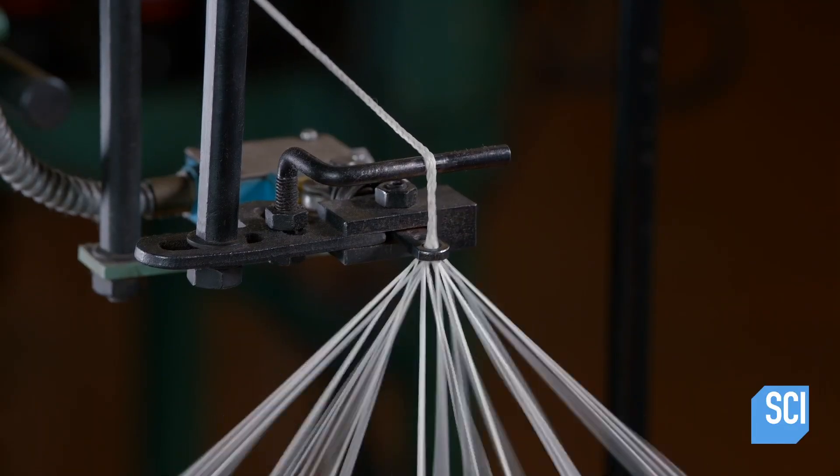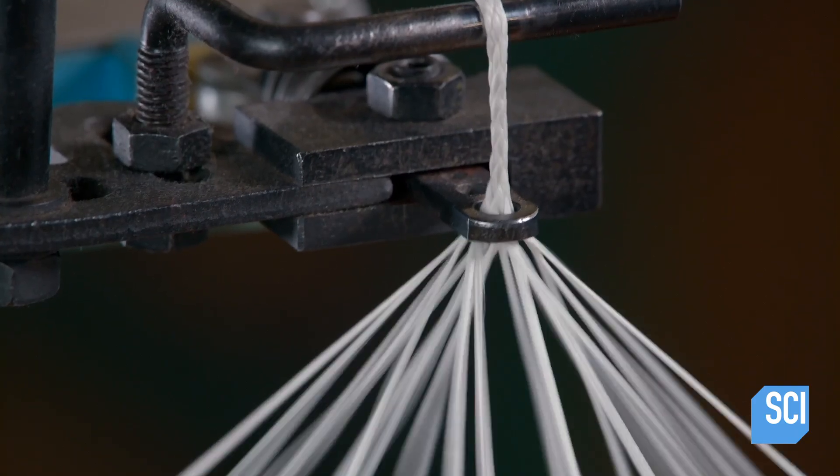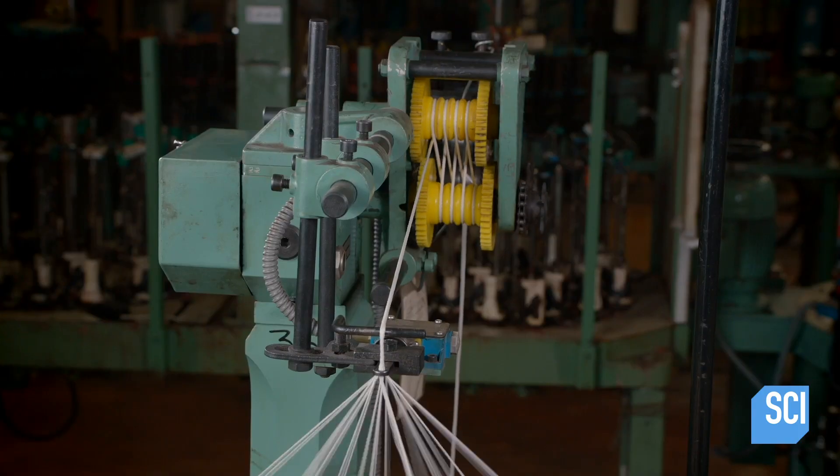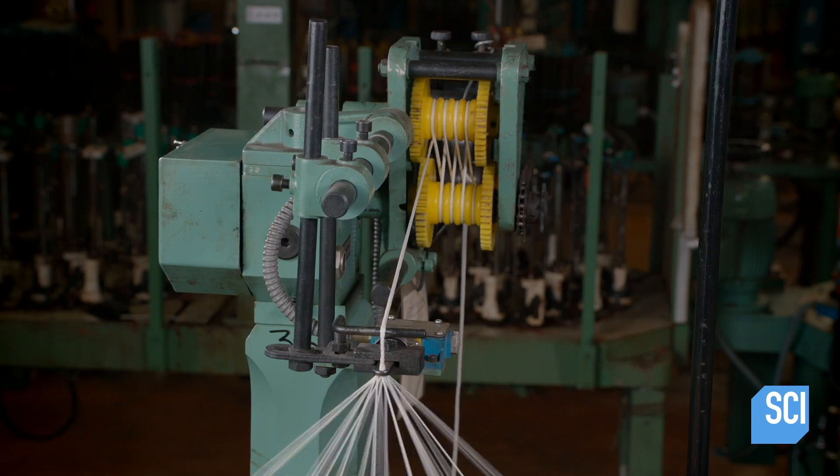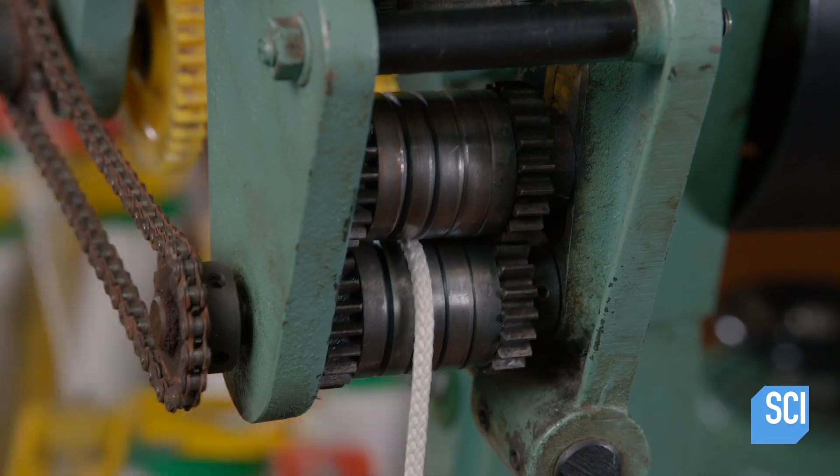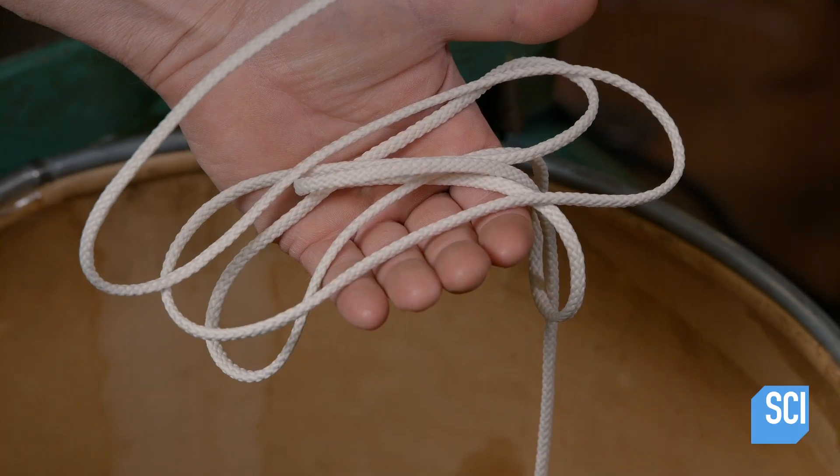Then the machine begins braiding a continuous round shoelace cord. These wheels apply tension to pull any loose braids tighter so that the cord diameter is uniform. The finished cord, which is about a mile long, collects in a barrel.